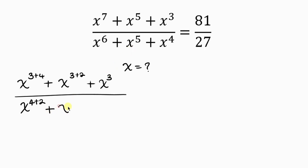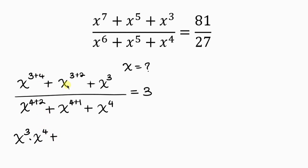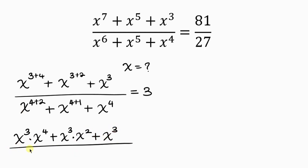x to the 5 is the same as x to the 4 plus 1, and then plus x to the 4. And 81 divided by 27 is 3. So now this becomes x to the 3 times x to the 4, according to the law of indices, plus x to the 3 times x to the 2, plus x to the 3, all over x to the 4 times x to the 2, plus x to the 4 times x to the 1, plus x to the 4, equal to 3.